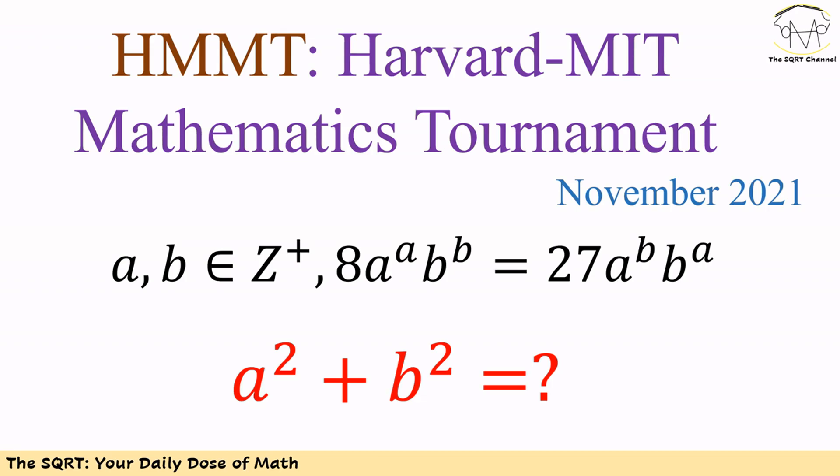Hello everyone. In this video we are going to talk about a problem from the Harvard-MIT Mathematics Tournament from November 2021. In this problem we have two positive integers a and b. We know that 8·a^a·b^b is equal to 27·a^b·b^a, and we want to find a² + b².